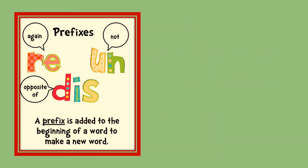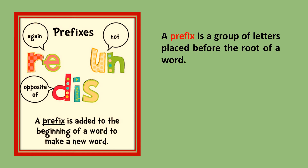What are prefixes? You can see 're', 'un', and 'dis' are all added before the word, in front of the word. So a prefix is added to the beginning of a word to make a new word — it is a group of letters placed before the root of a word.